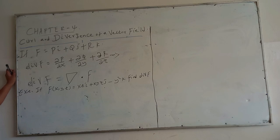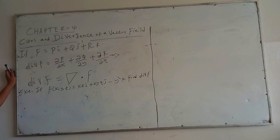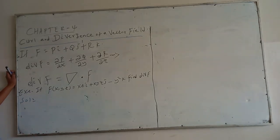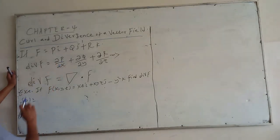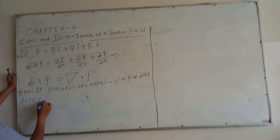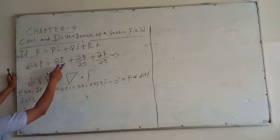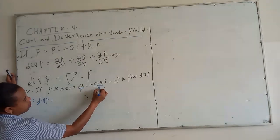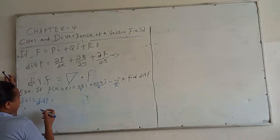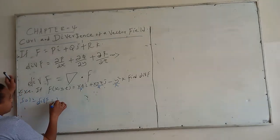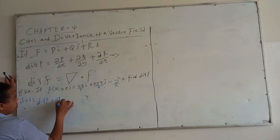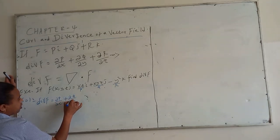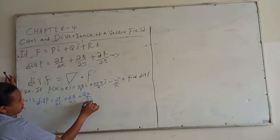If f(x, y, z) has components: p = xz, q = xyz, and r = −y², find the divergence of F using the del operator. Divergence of F equals partial of p with x, plus partial of q with y, plus partial of r with z.